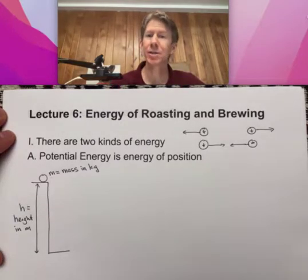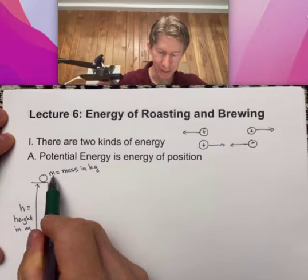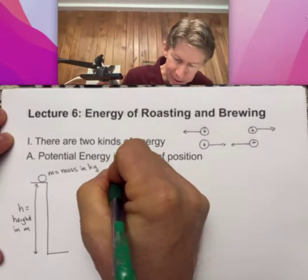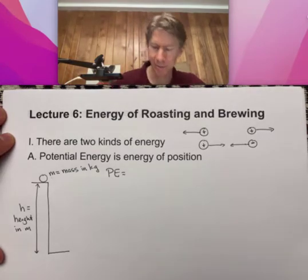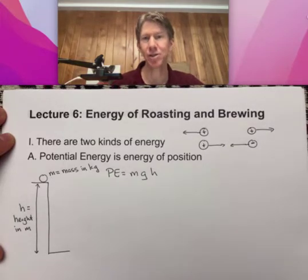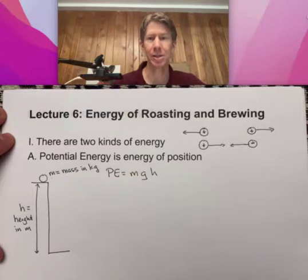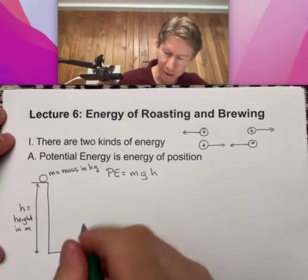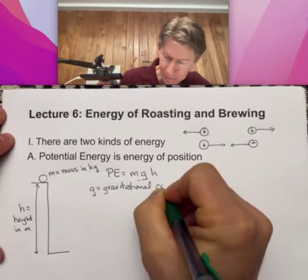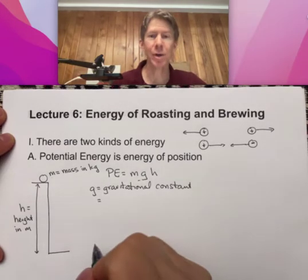It turns out that you can calculate the potential energy between this ball and another surface by using the equation PE, which stands for potential energy, equals mgh - mass times gravity times height. g is gravity that is attracting this ball towards the center of the earth, and really the ball is attracted to the earth itself. g is the gravitational constant, and it is equal to 9.8 meters per second squared.